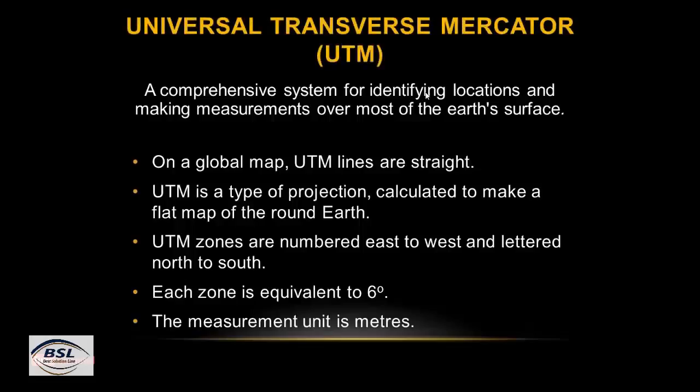For identifying locations and making measurements over most of the earth's surface, UTM lines on a global map are straight. UTM is a type of projection calculated to make a flat map of the round earth, with the measurement unit being meters.